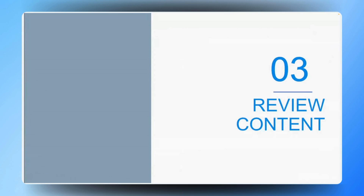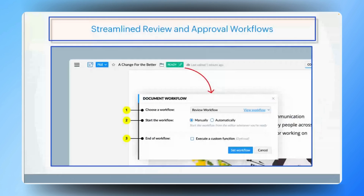Zoho Writer simplifies the review process with its workflow feature. This allows you to send documents for review or approval seamlessly. You can even set up a multi-step workflow where a document first goes through a review process, and once that's completed it's automatically forwarded to the final approval stage. This ensures that content is polished through multiple rounds of feedback and approval, ensuring quality and consistency before it's published or printed.